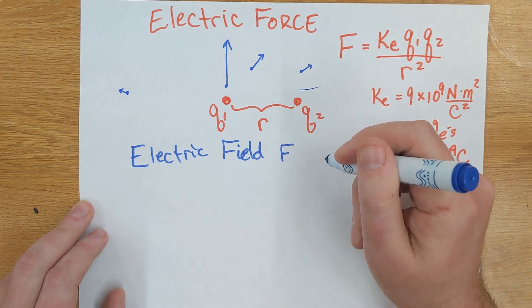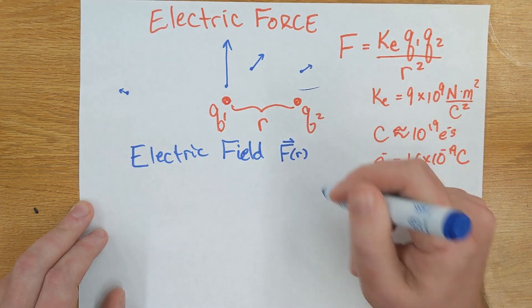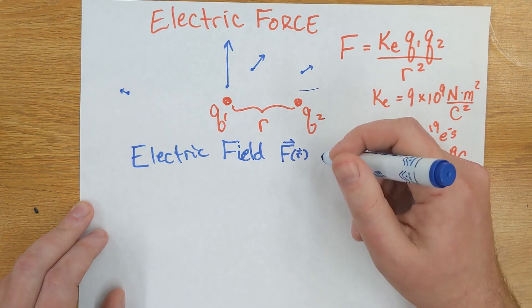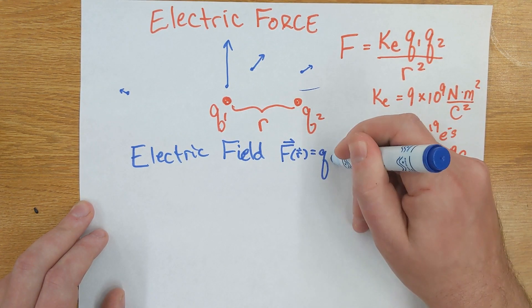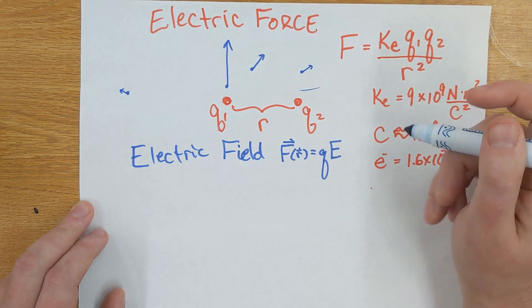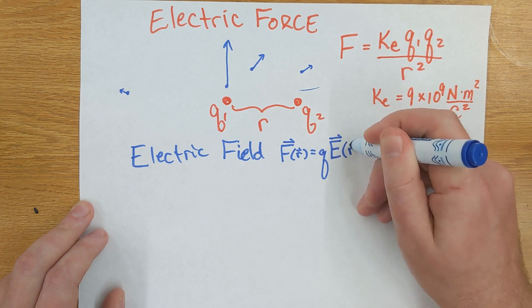So the relationship is, we're saying, the force as a function of r, force is a vector, so is my position, is going to be q times some other vector field, some other vector function that fills space. And we call that E for electric field.